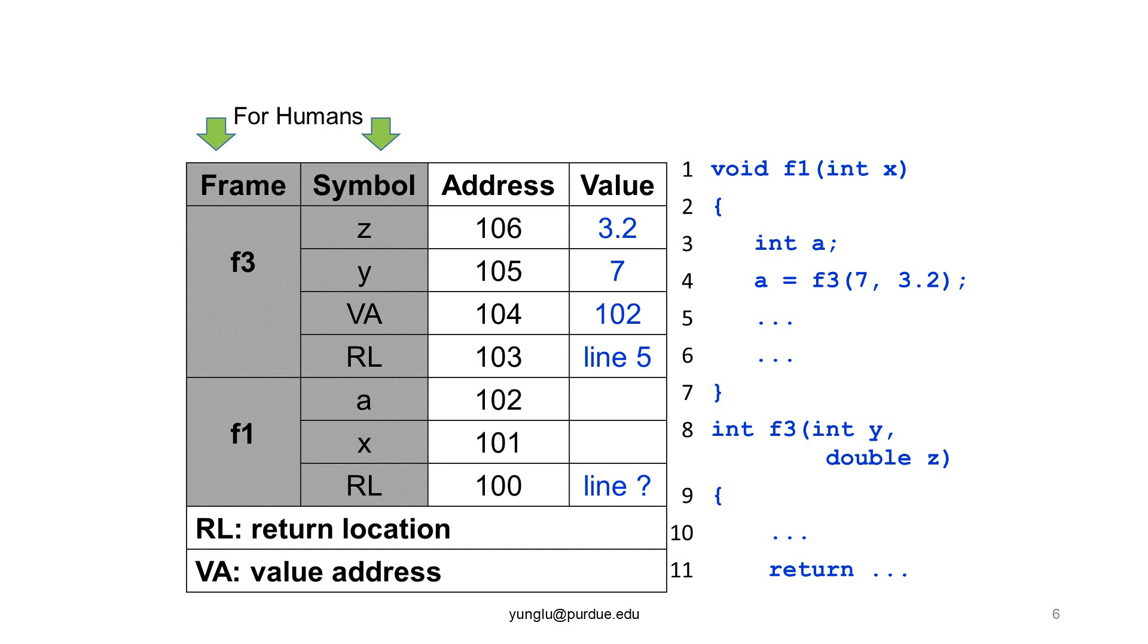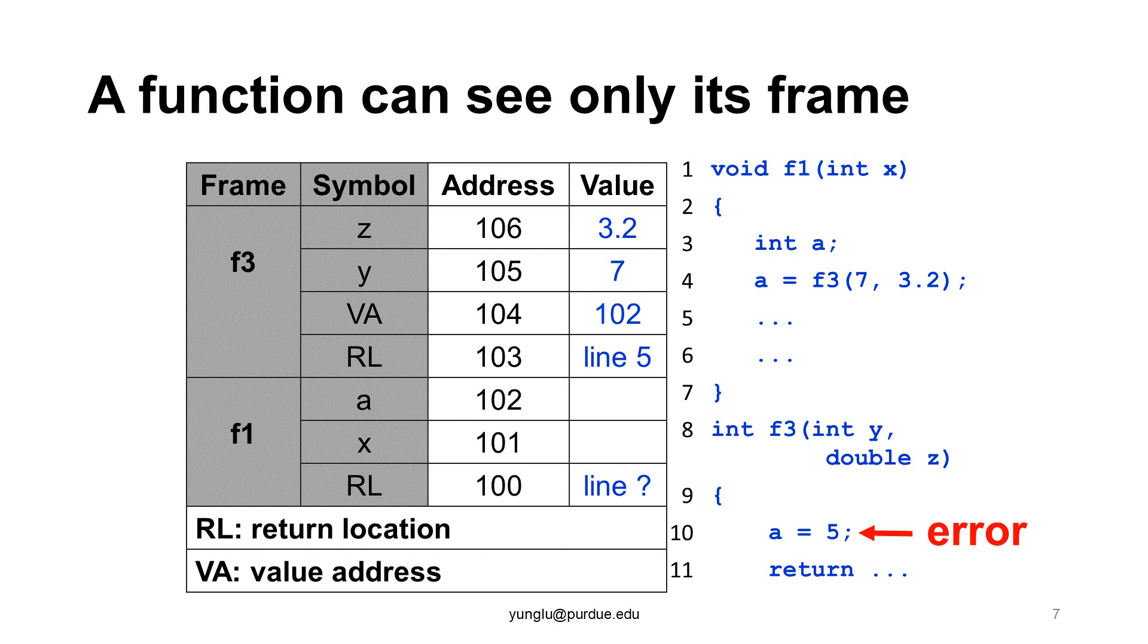It is 102. Please notice that the value address is stored in the stack memory and space is needed for storing this information. The value address is stored at address 104. Do not mix the value and the address. The value address is 102 and this address is stored at location 104. Let me introduce a new concept about the scope of variables.